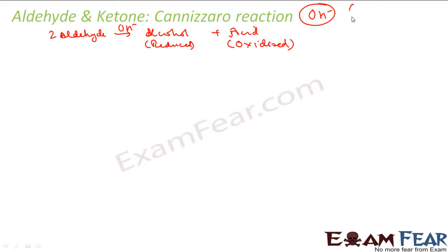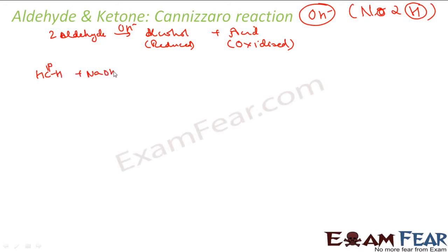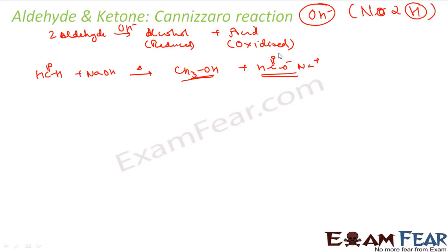There is no alpha hydrogen, so this reaction takes place. For example, take formaldehyde (HCHO). If I react it with a base and heat it slightly, I get methanol (alcohol) and sodium formate (HCOONa). This one is oxidized and this one is reduced.